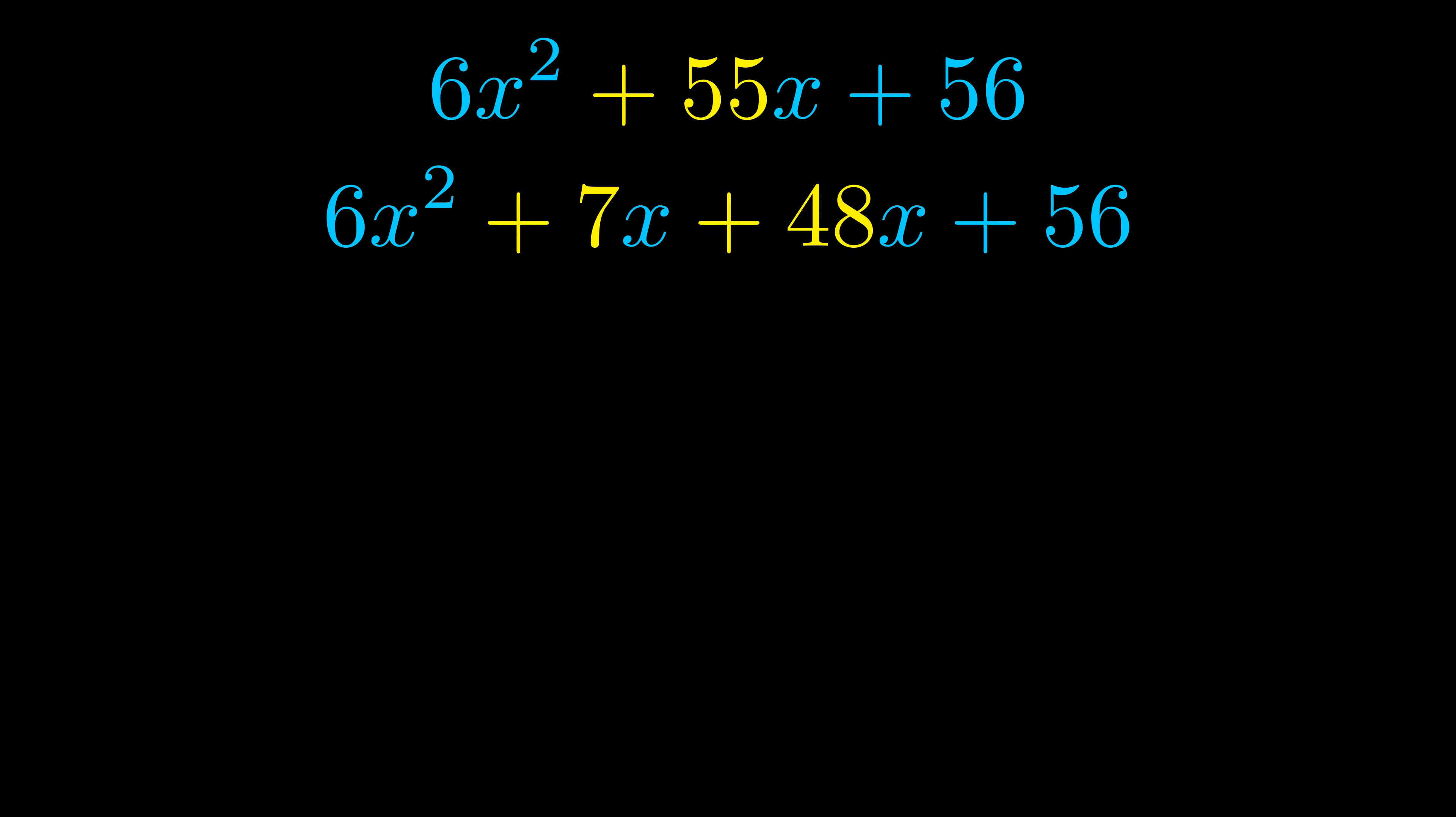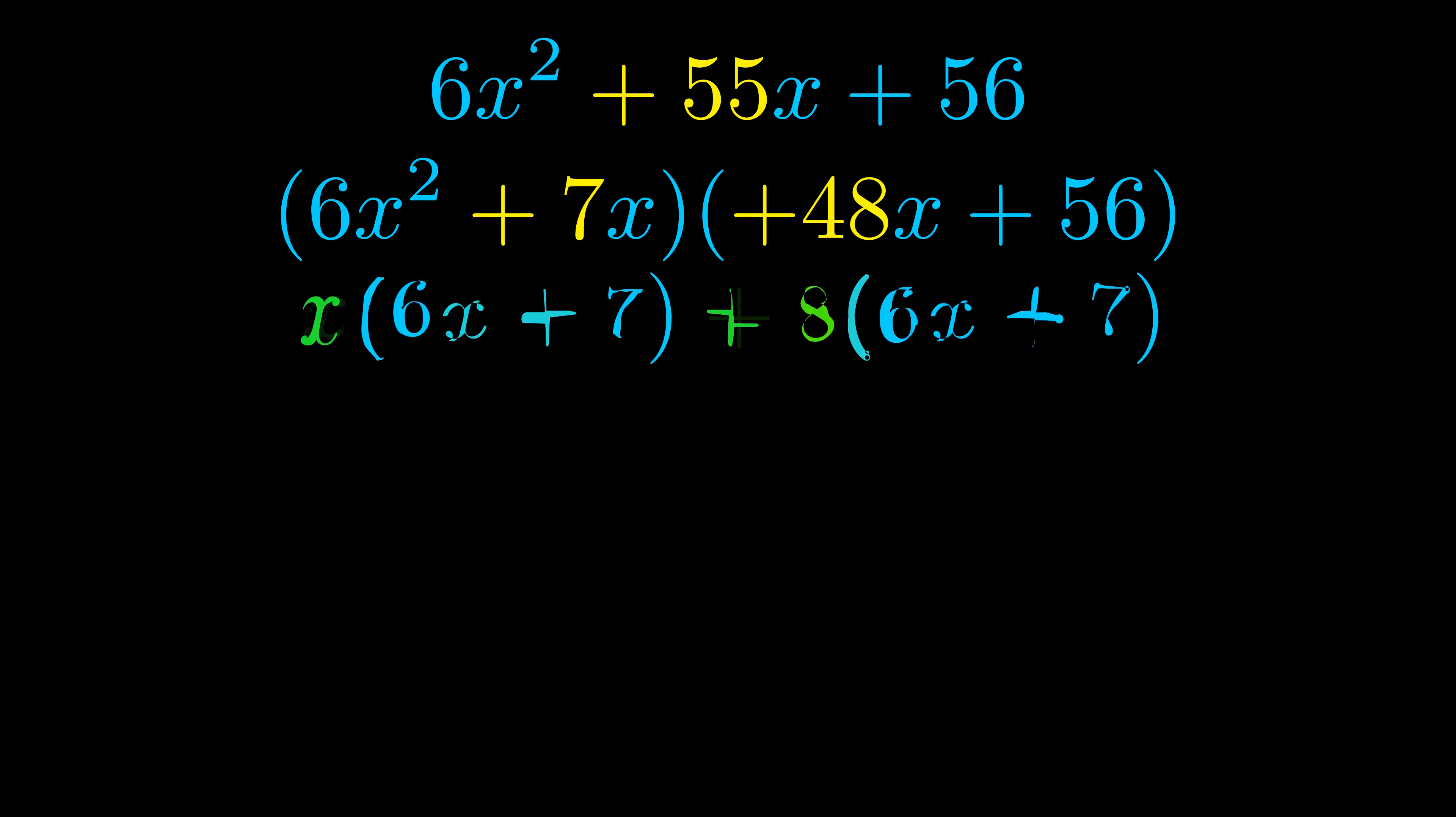Once we've done this we go ahead and we put parentheses around the first term and the last term. And we do that so that we can take the greatest common factor out of both terms. We can see the greatest common factor is now outside in green. Notice also how what remains inside of the parentheses is the same in both cases.